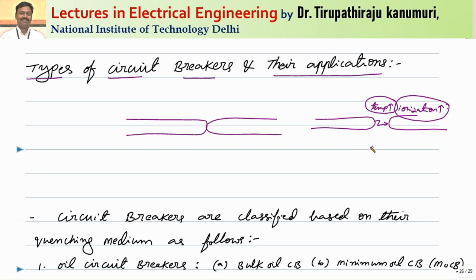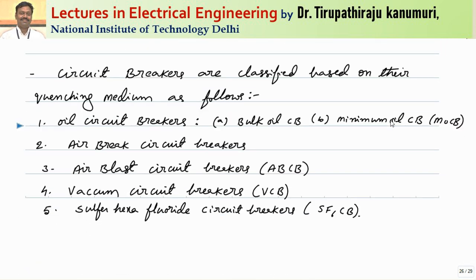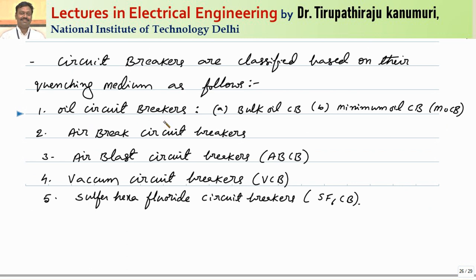Depending on which type of material is used for decreasing the temperature and decreasing the ionization of the medium between the contacts, different types of circuit breakers exist. Based on that, the first type is oil circuit breakers, which can be either a bulk oil circuit breaker (also called a tank oil circuit breaker) or a minimum oil circuit breaker (MOCB). The second type is the air brake circuit breaker, where simple natural air is used for breaking.